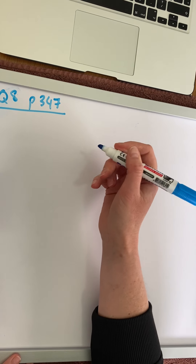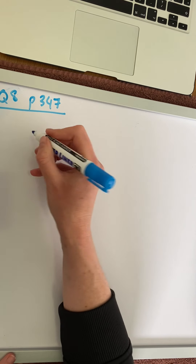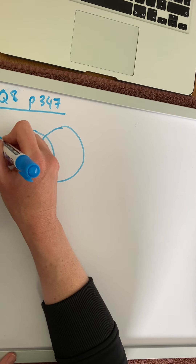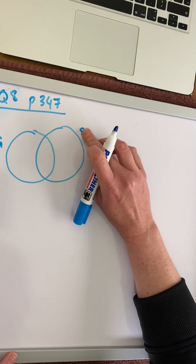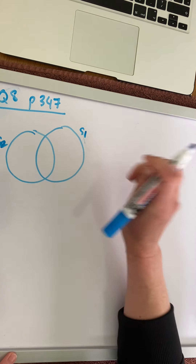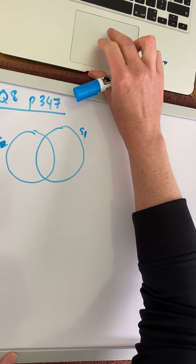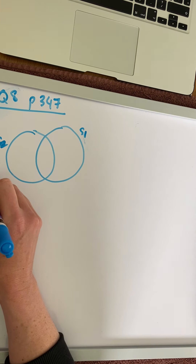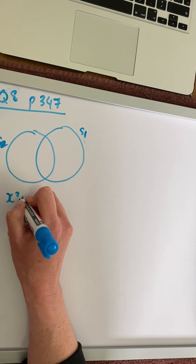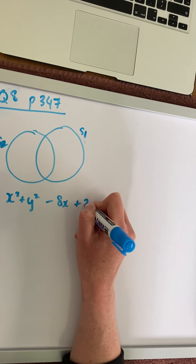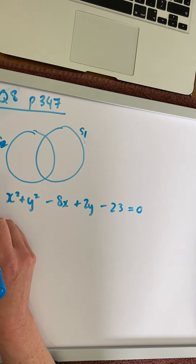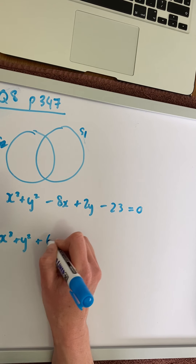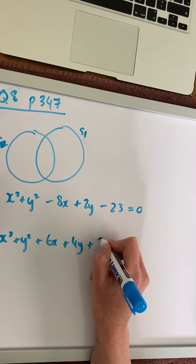In question 8, we are given two circular ring roads, S1 and S2, and we're given a diagram. We are also given the equations of the two circles. The equation of S1 is x² + y² - 8x + 2y - 23 = 0, and the equation of S2 is x² + y² + 6x + 4y + 3 = 0.